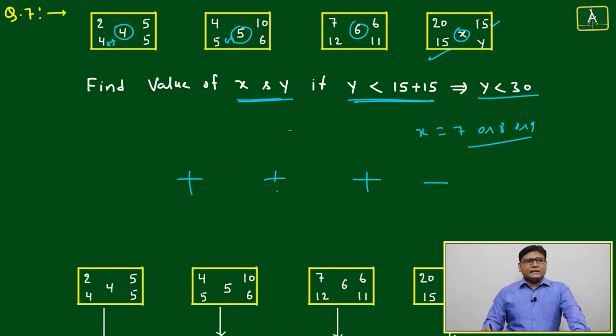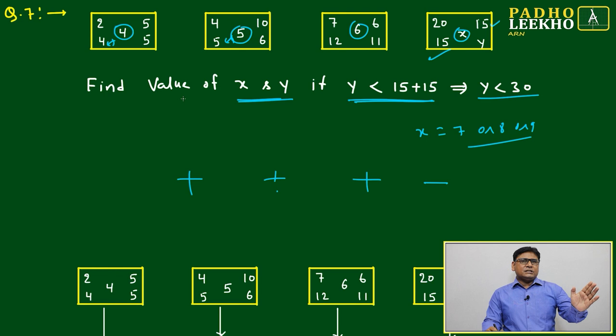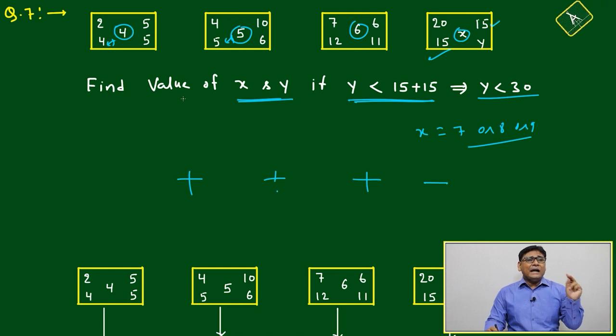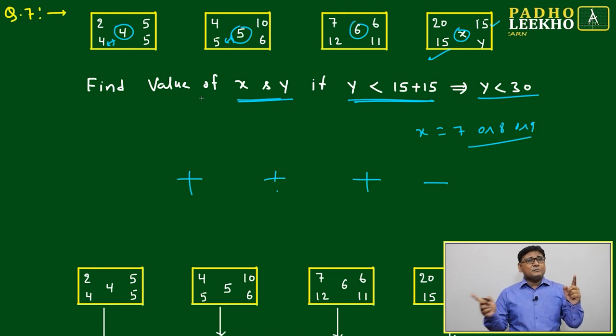In the last question, we saw that if the same kind of number pattern is represented on triangles, the center number came nearest to the smallest number. Here it's not nearest—it's coming near to the smallest or second smallest number.